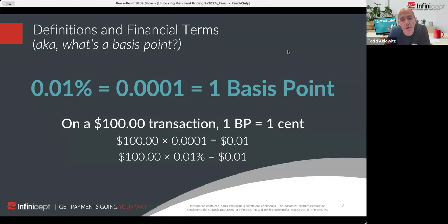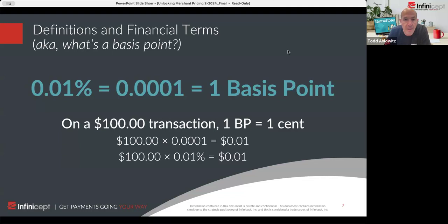On a $100 transaction, one basis point is one cent. $100 times 0.0001 is a penny. $100 times 0.01% is a penny. All three of those are the exact same equation, and that's really where we get this idea of a basis point.